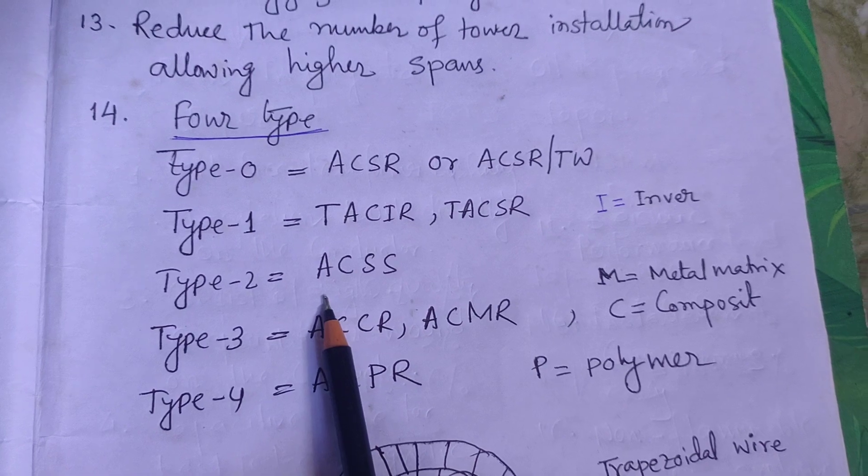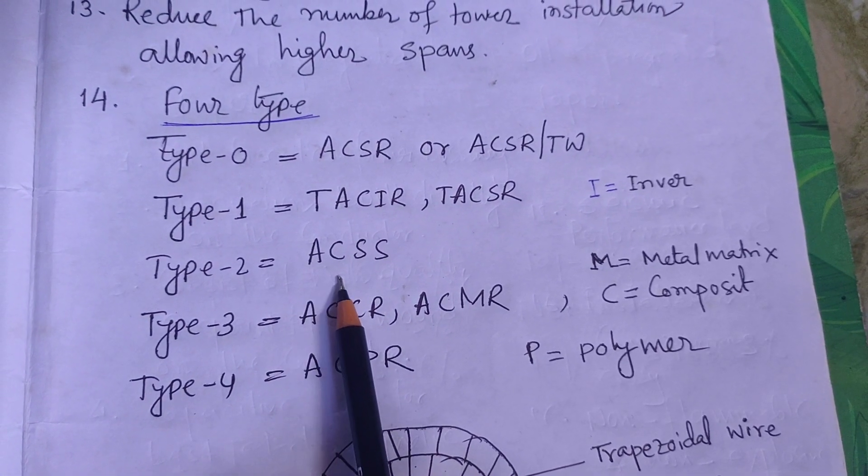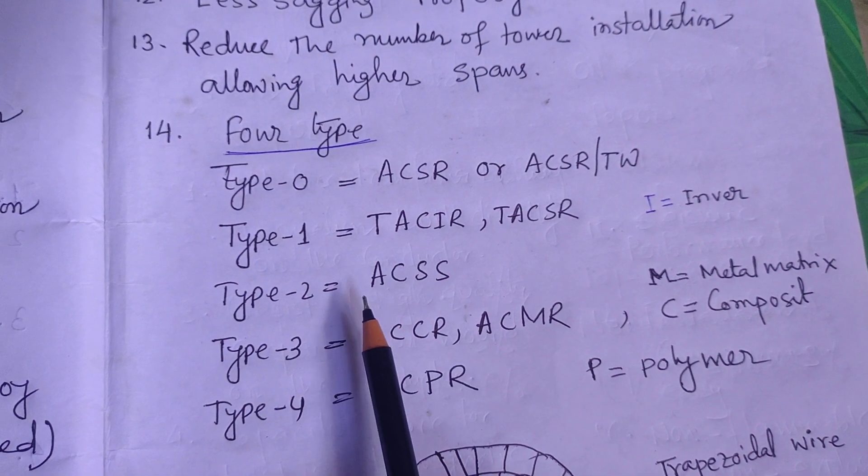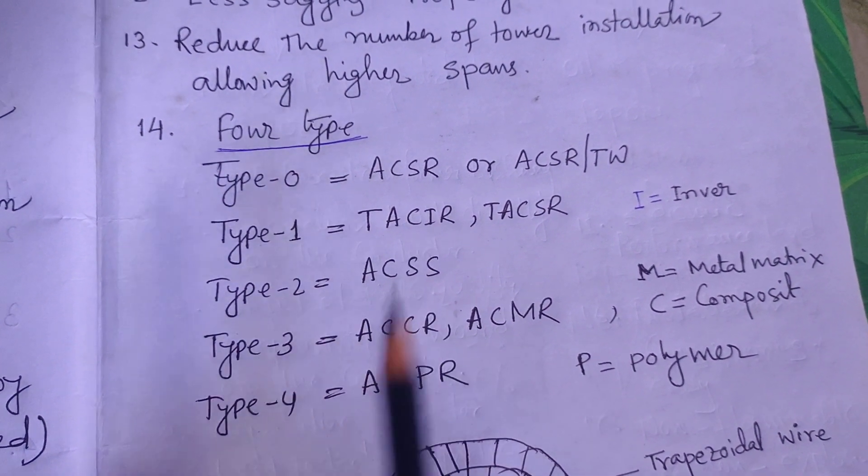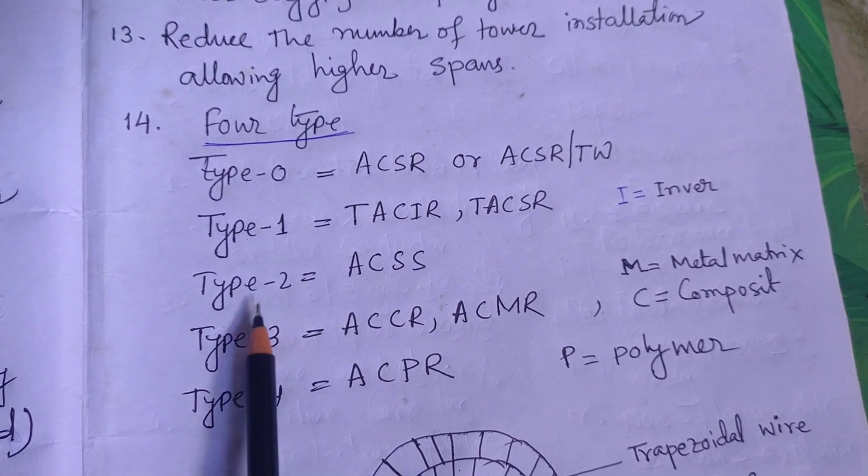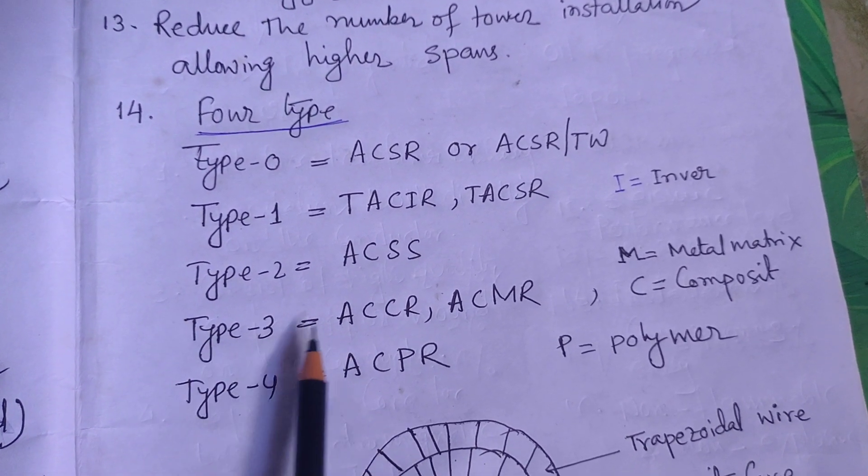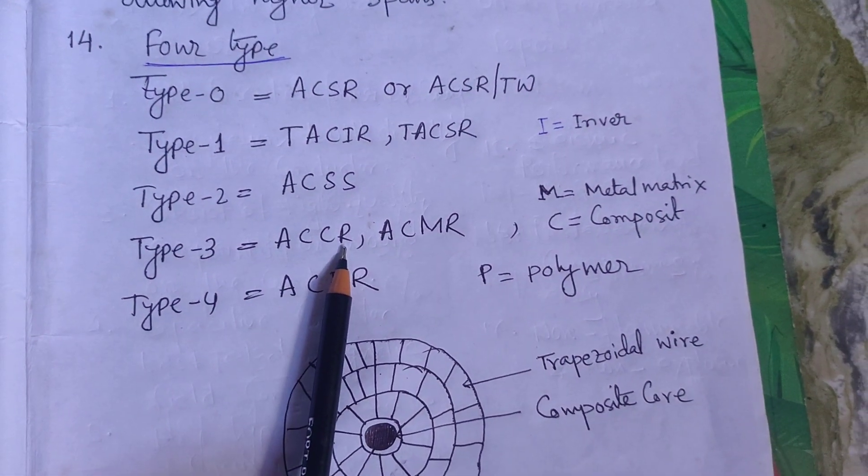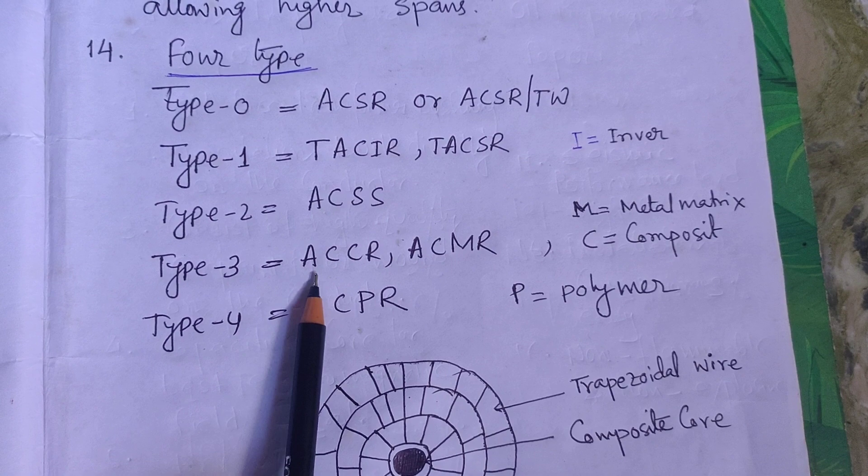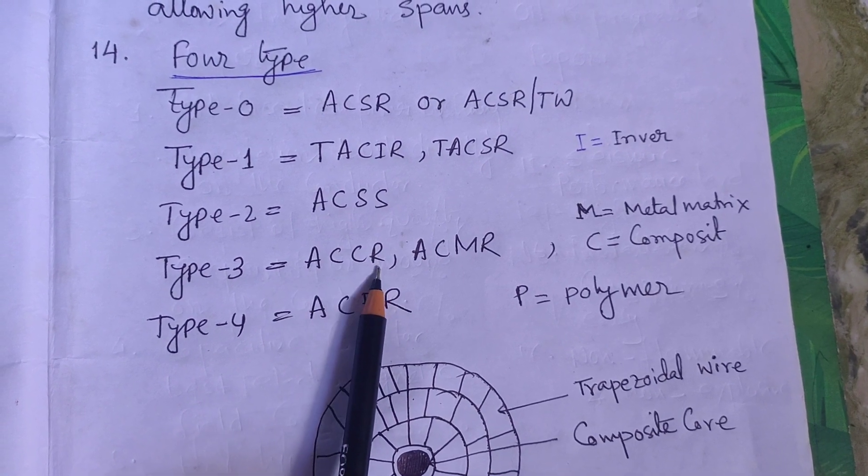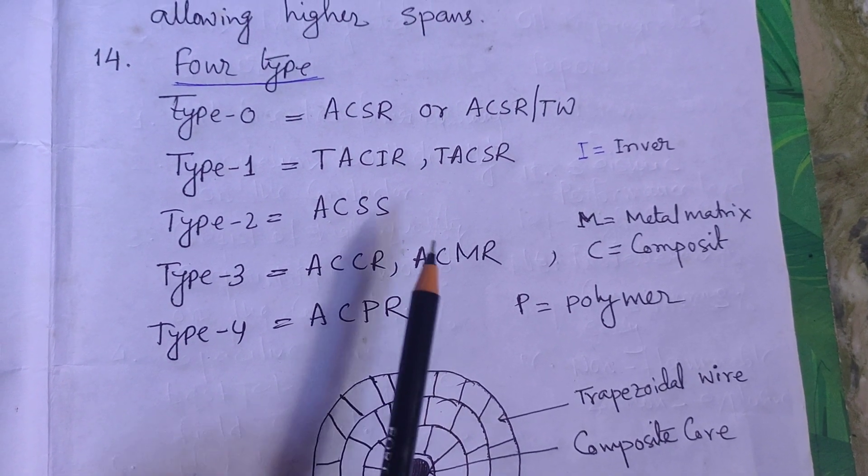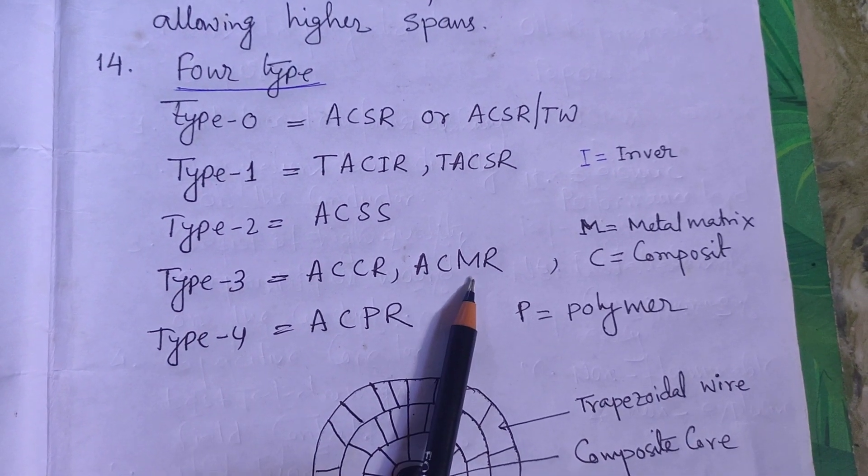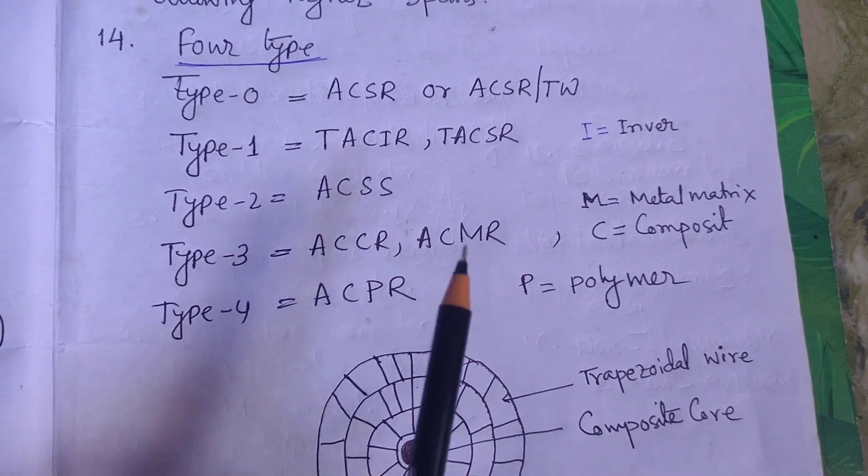Type 3 conductor is ACCR - Aluminum Conductor Composite Reinforced, and ACMR - Aluminum Conductor Metal Matrix Reinforced. Type 4 is ACPR - Aluminum Conductor Polymer Reinforced.